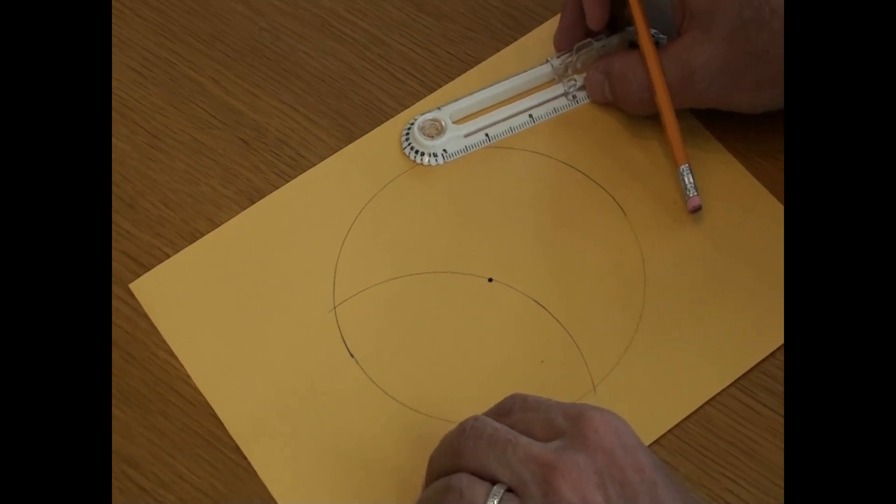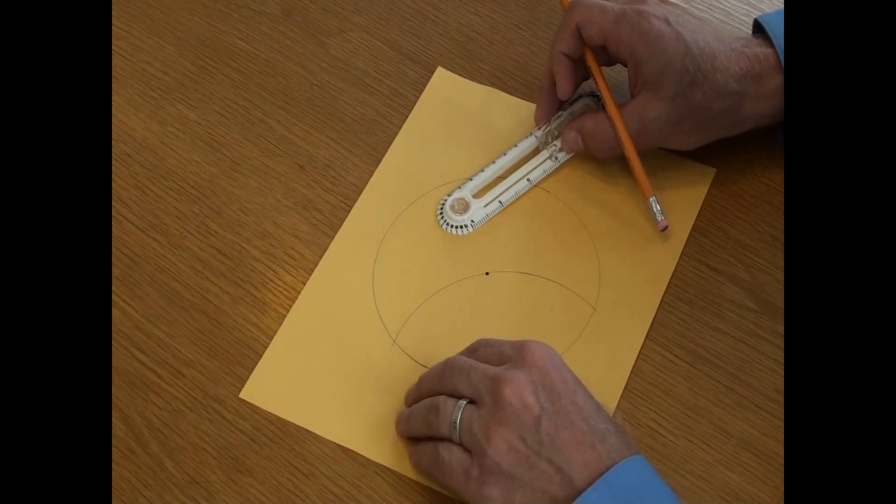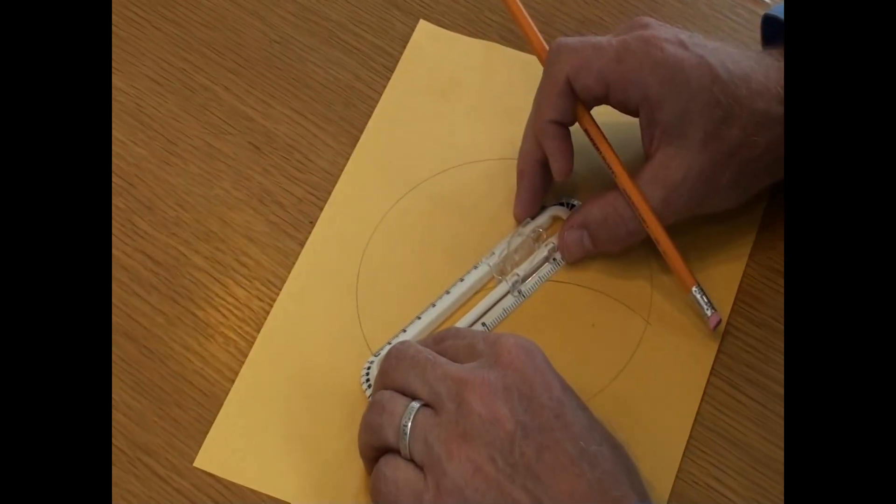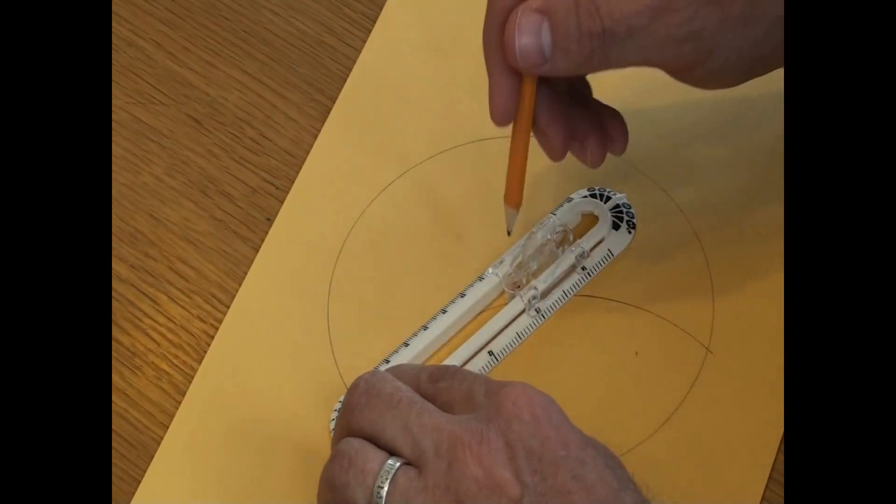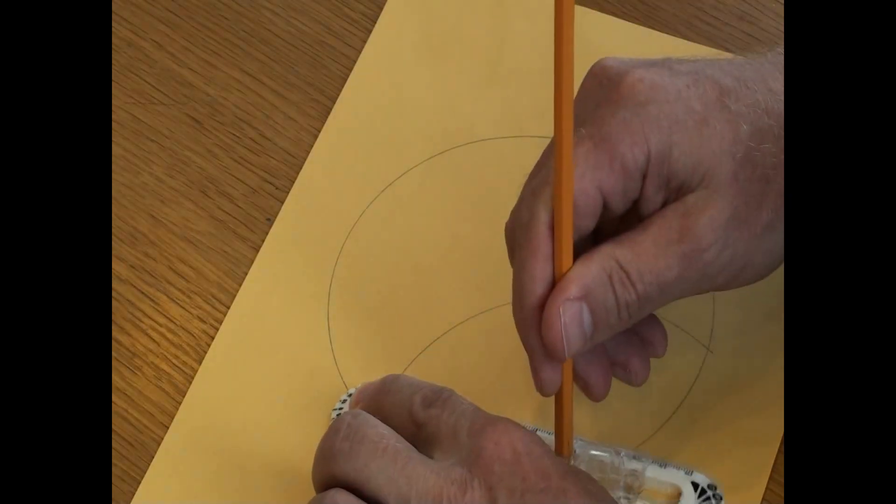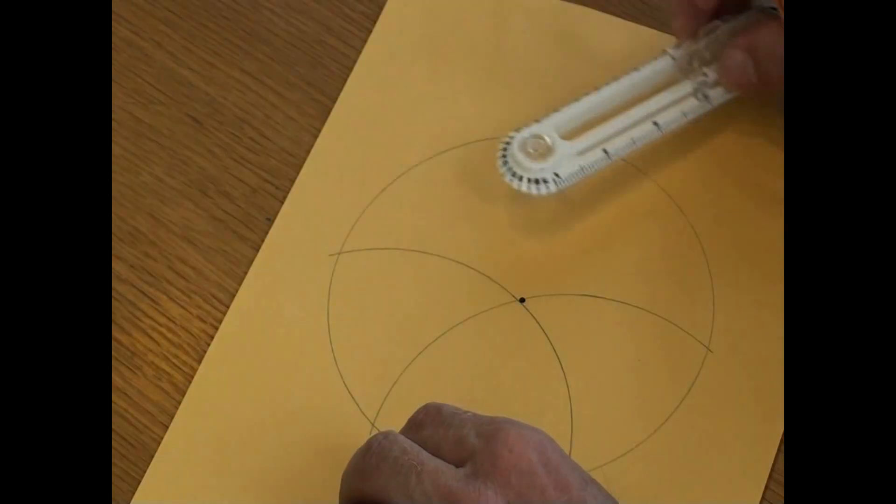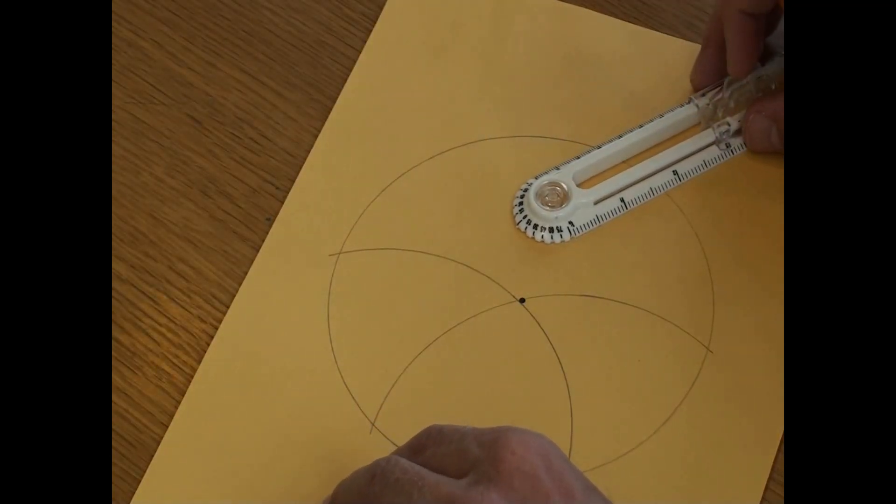The third step is to repeat step two, but this time I will place the pivot point on the intersection of the first arc and the circle, and I will repeat this process four more times until the design is complete.